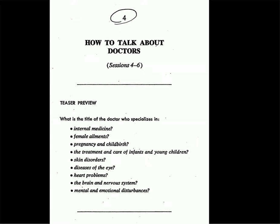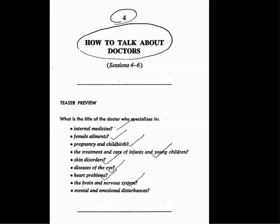Chapter 4 of Word Power Made Easy: How to Talk About Doctors. In this chapter we are going to learn about internal medicine, female ailments, pregnancy and childbirth, treatment and care of infants and young children, skin disorders, diseases of the eye, heart problems, the brain and nervous system, and mental and emotional disturbance.